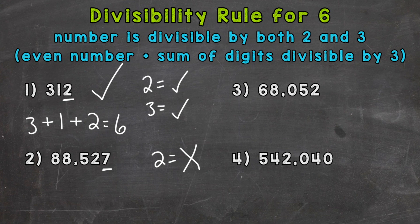So on to number 3, we have 68,052. This number ends in a 2. It's an even number. So it is divisible by 2. So let's try 3. 6 plus 8 plus 5 plus 2. Remember, we need the sum of the digits.